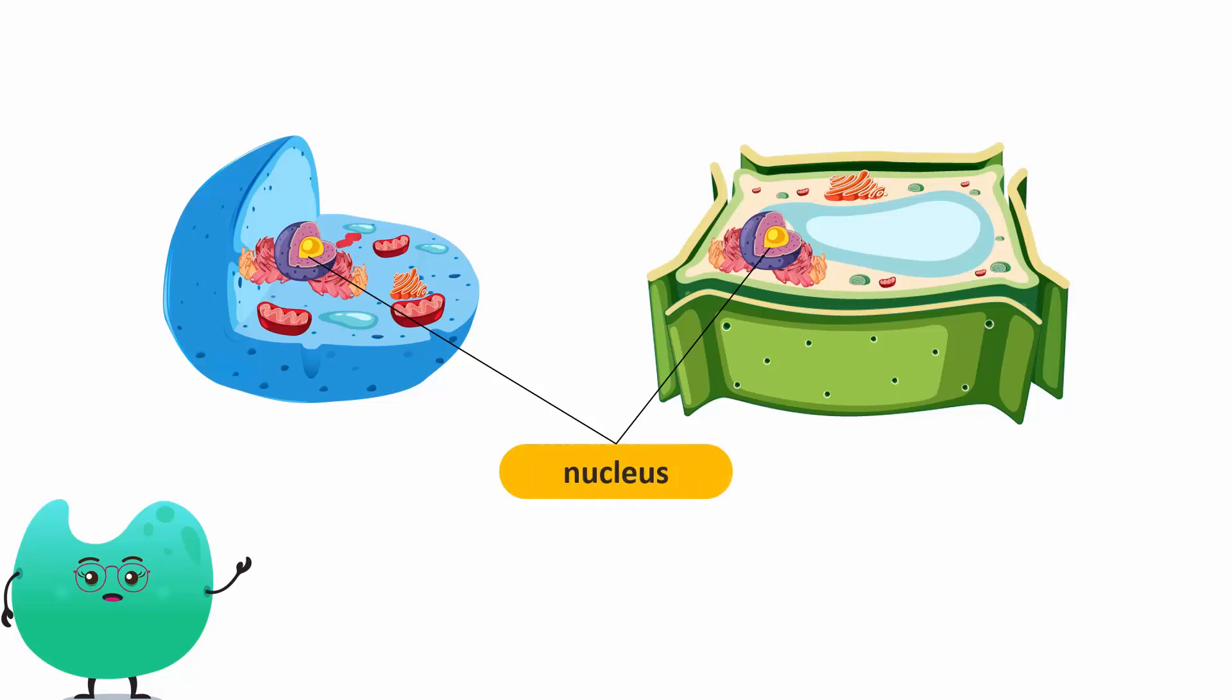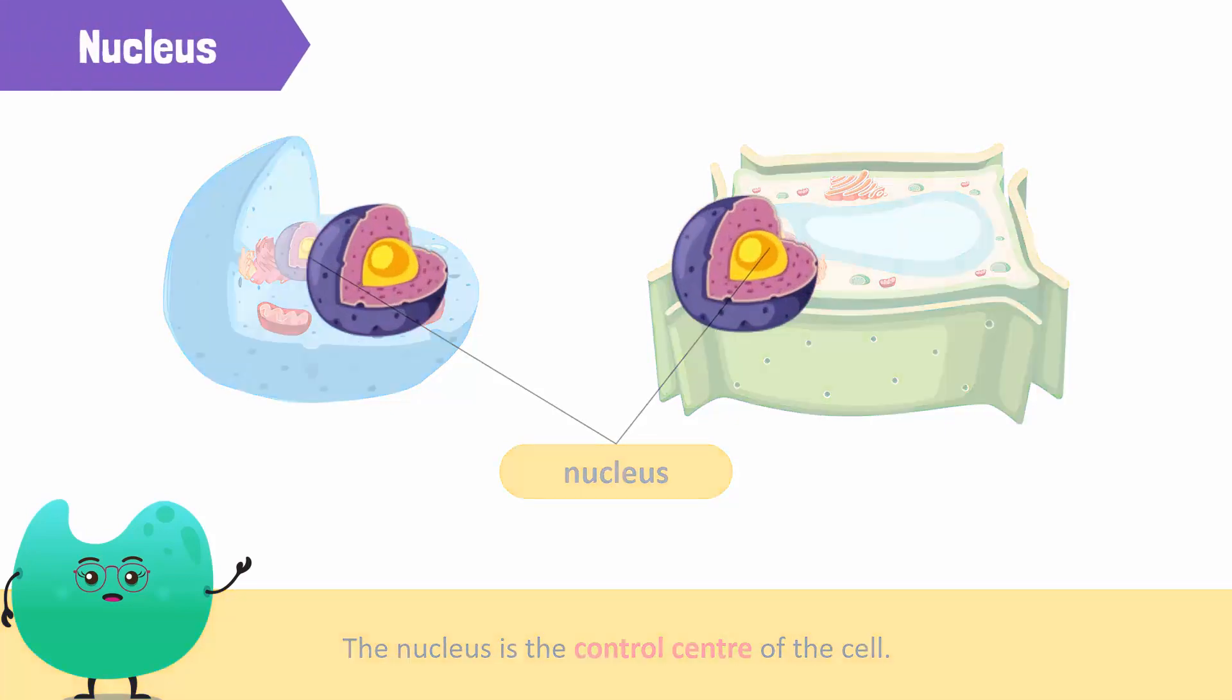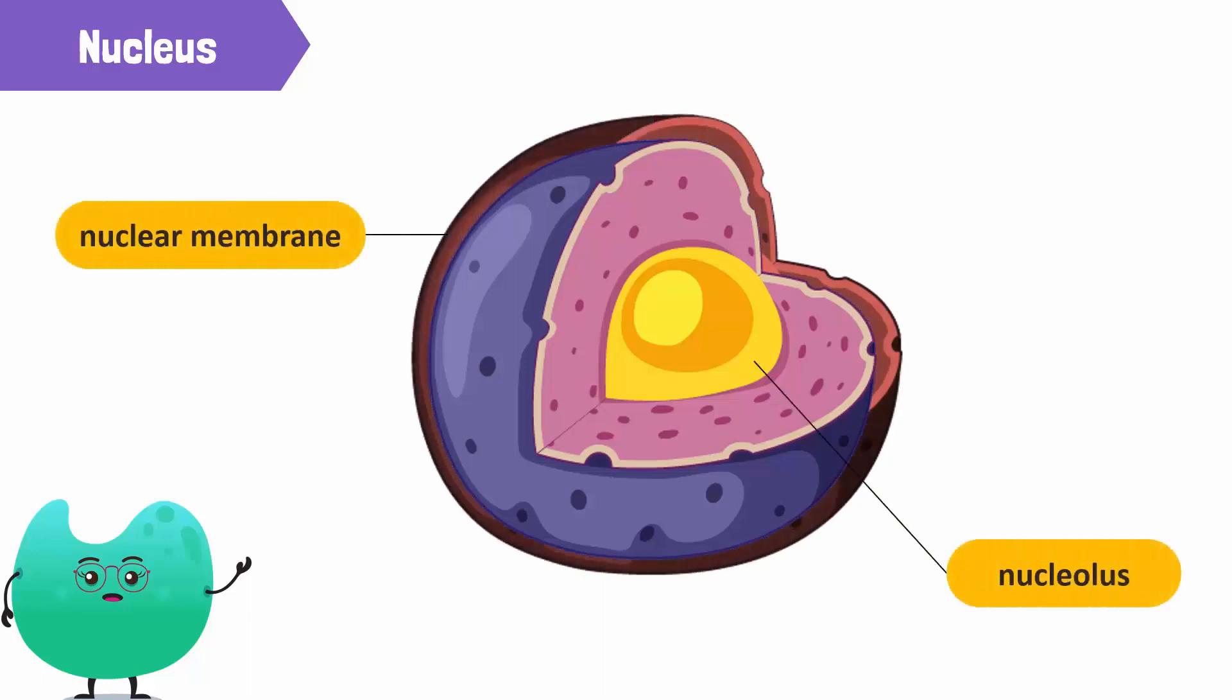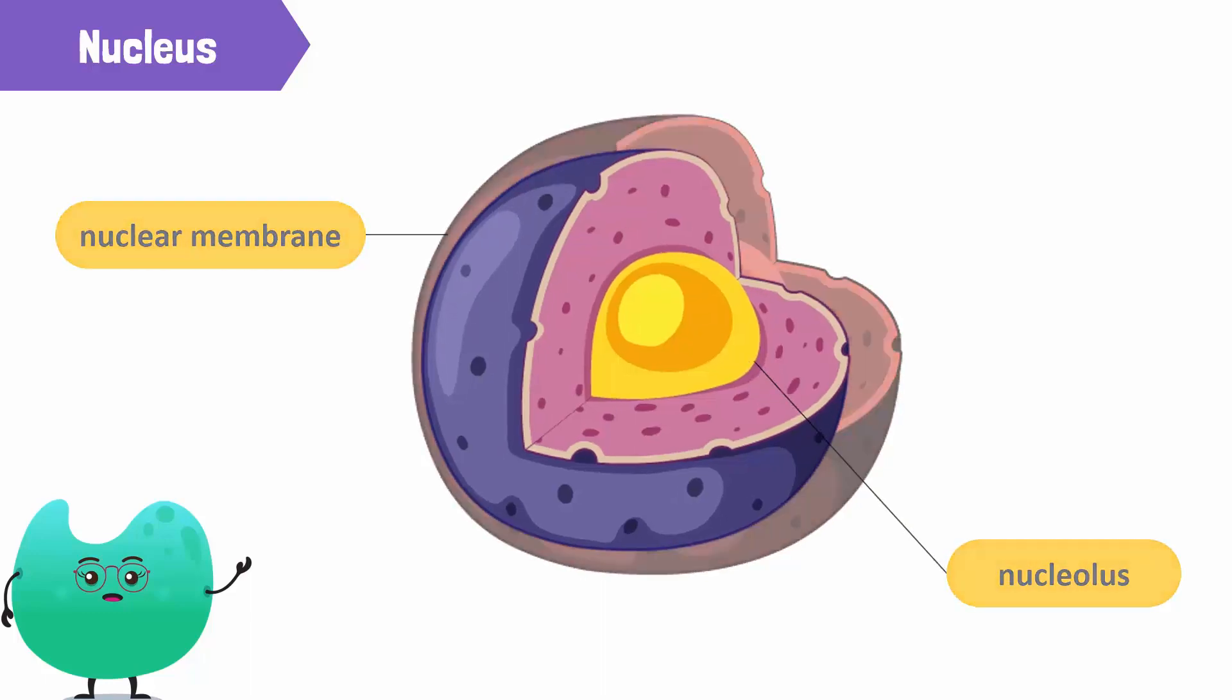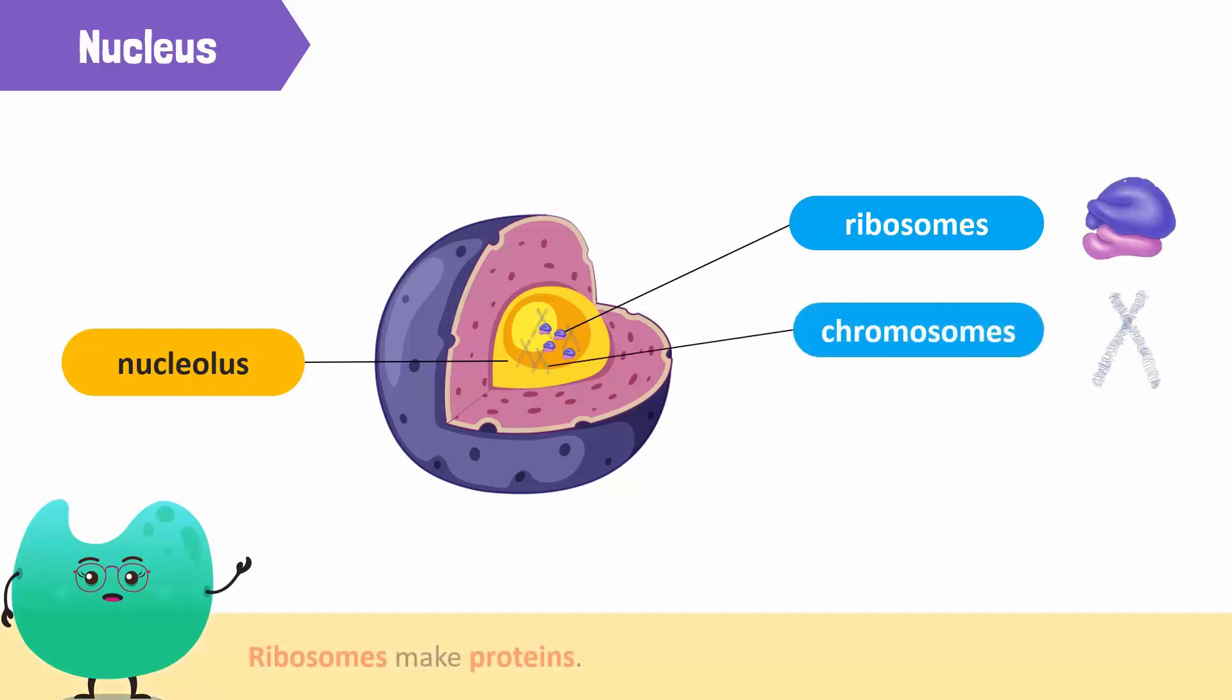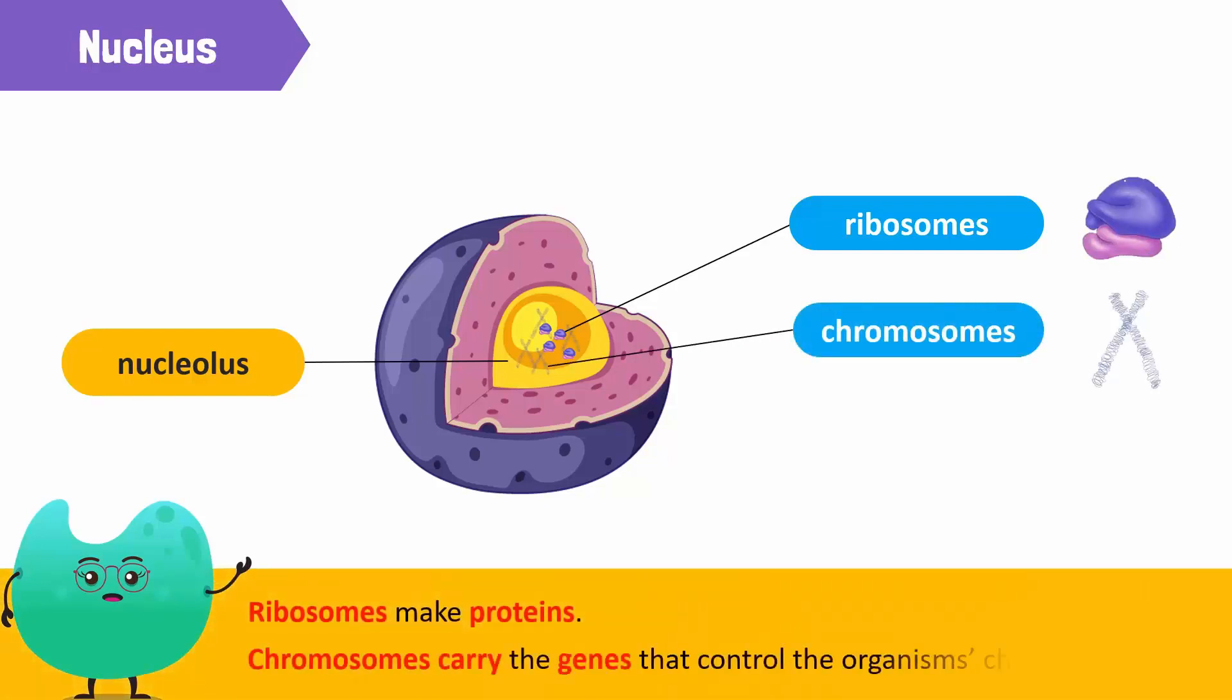This is the nucleus. A nucleus is the control centre of the cell and acts much like the brain of your body. It is surrounded by a nuclear membrane and has a nucleolus. The nucleolus helps to make ribosomes and thread-like structures called chromosomes. Ribosomes make proteins while chromosomes carry the genes that control the organism's characteristics.